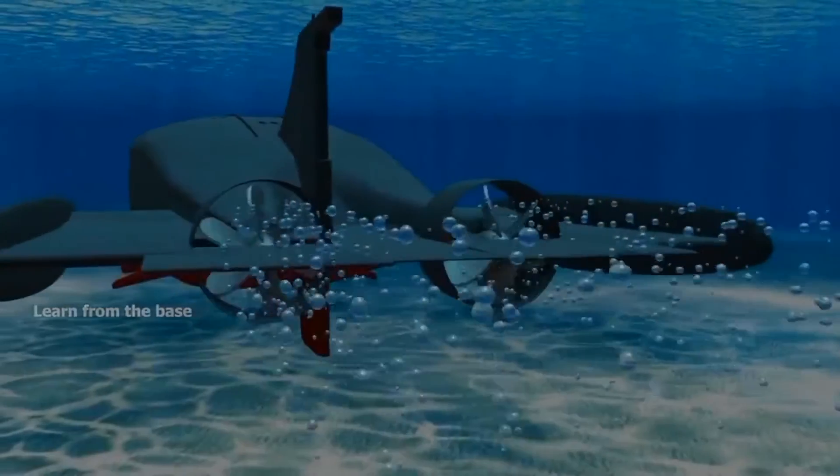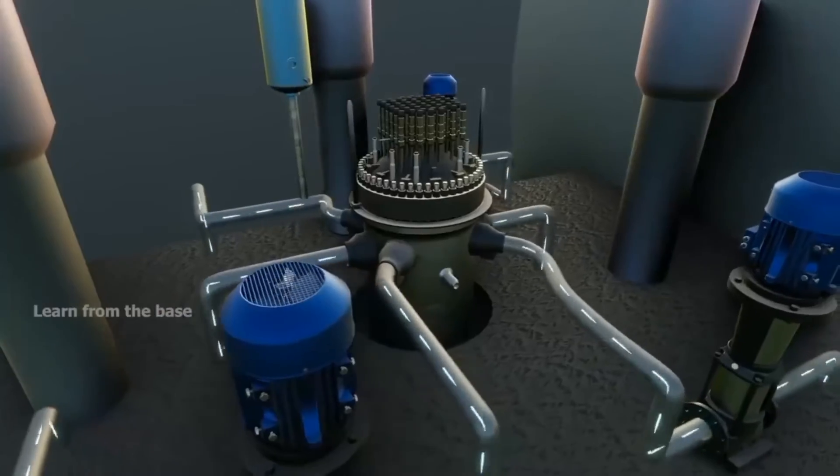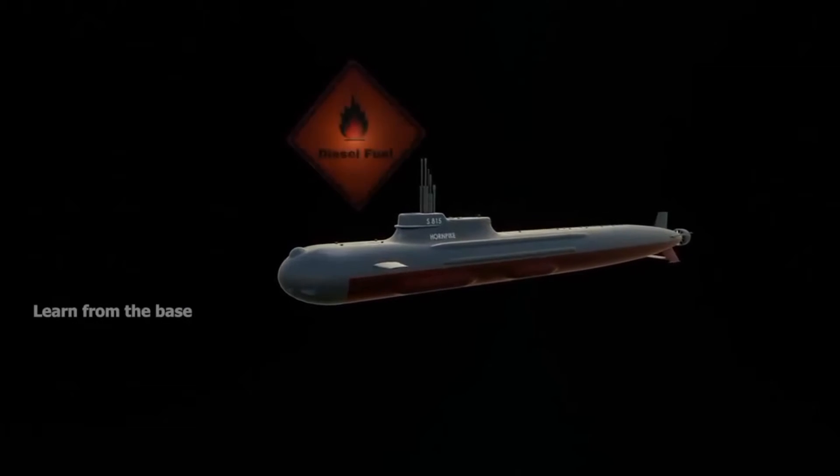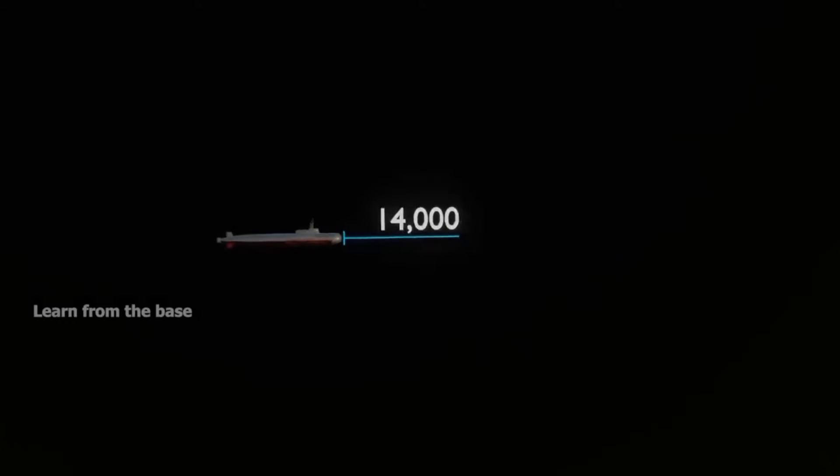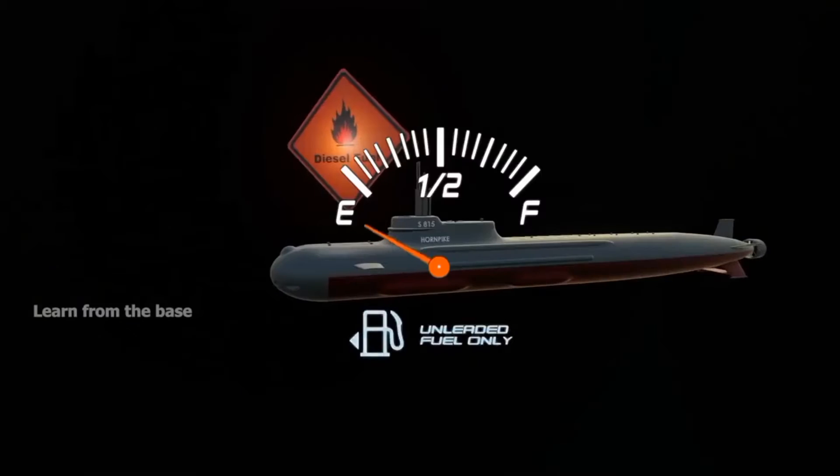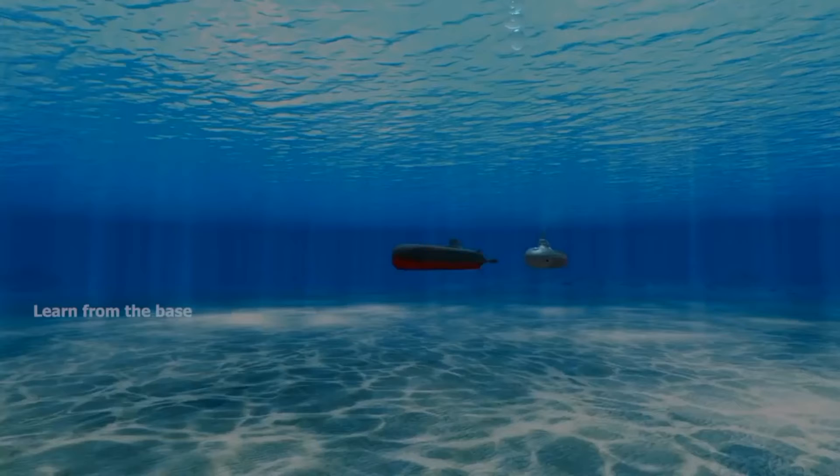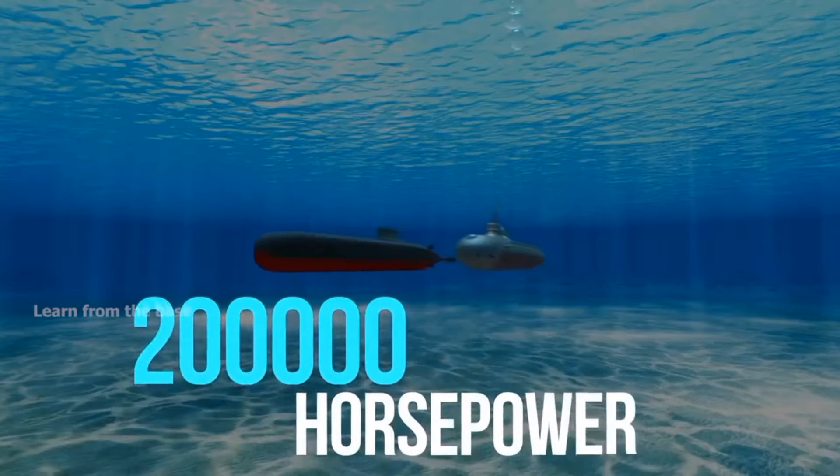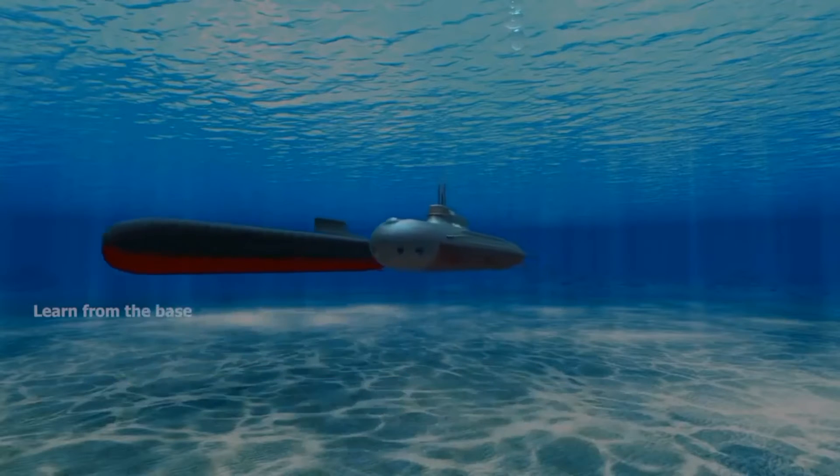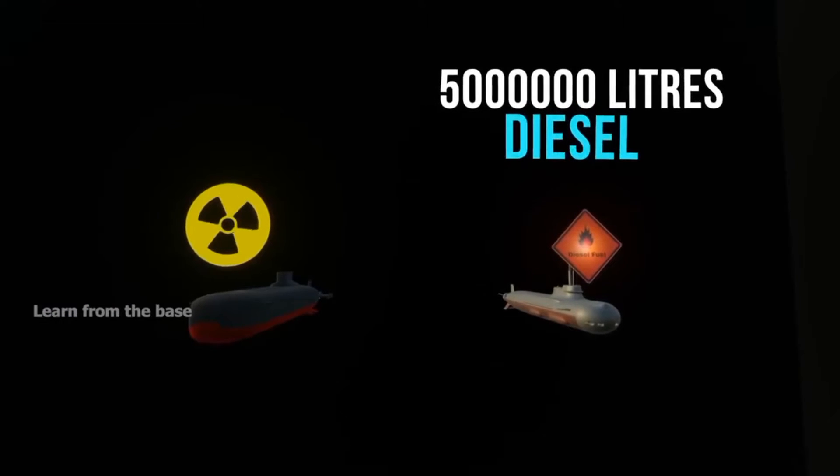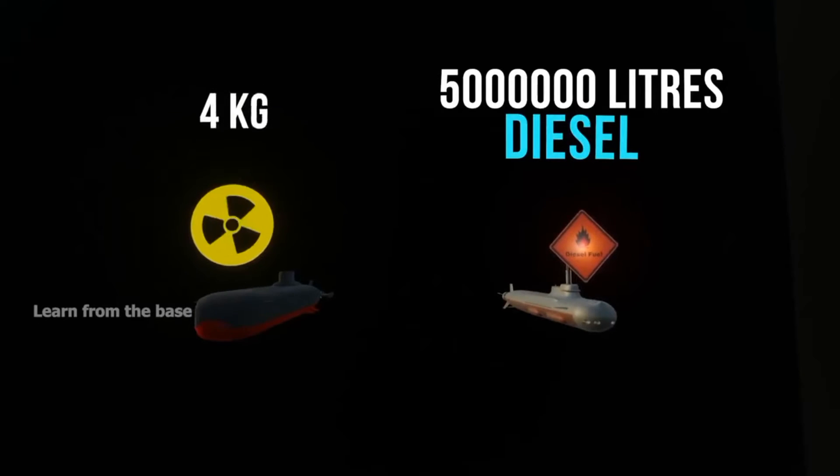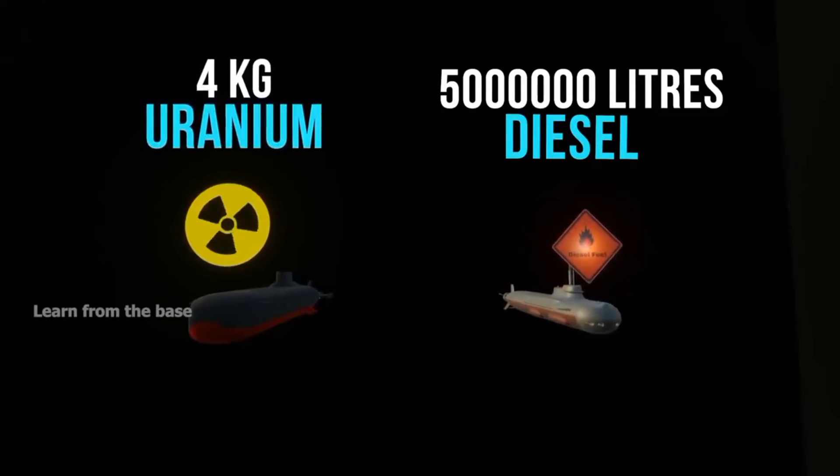Typhoon's propulsion system is powered by nuclear power. Some submarines have diesel electric engines. Diesel submarines can travel only 14,000 nautical miles before needing to refuel. If you run each type of submarine with 200,000 horsepower non-stop for one week, the diesel engine would require 5 million liters of diesel fuel while a nuclear submarine would require only four kilograms of enriched uranium.